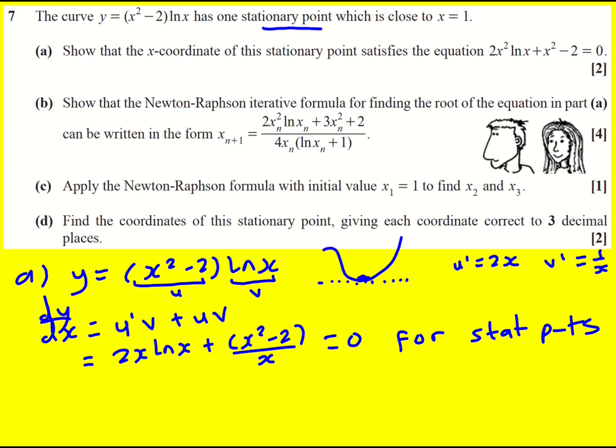Now we're not asked to find the stationary point right now, we're asked to just rearrange the equation. So I'm going to first of all multiply through by x. So 2x squared ln x plus x squared minus 2 equals zero, and actually that is exactly what we need.